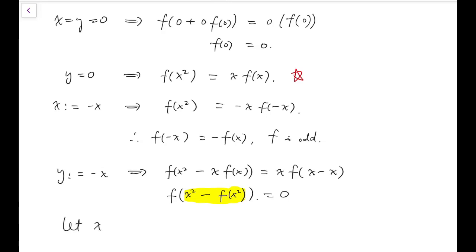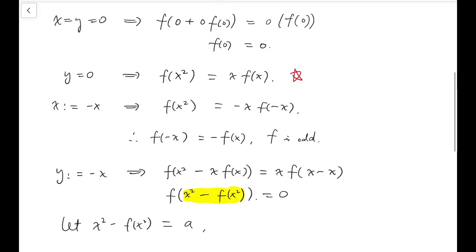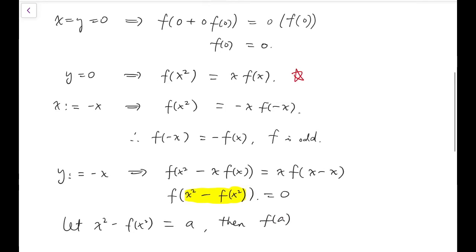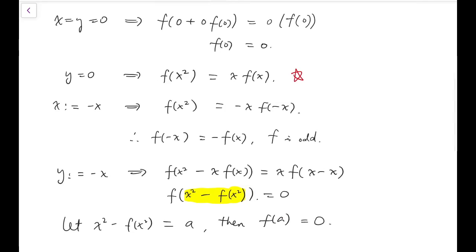So now let x squared minus f of x squared equal some a. Then we have f of a equals zero. Now, if this a is non-zero, then I can simply put x equals a.